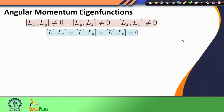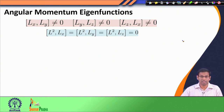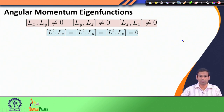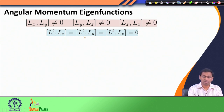To refresh your memory, we saw that the angular momentum operator would have 3 components Lx, Ly, and Lz, and these 3 operators Lx, Ly, Lz do not commute with each other. Whereas, we defined the L² operator, which was the sum of Lx², Ly², and Lz², and this L² operator commutes with Lx, Ly, and Lz.